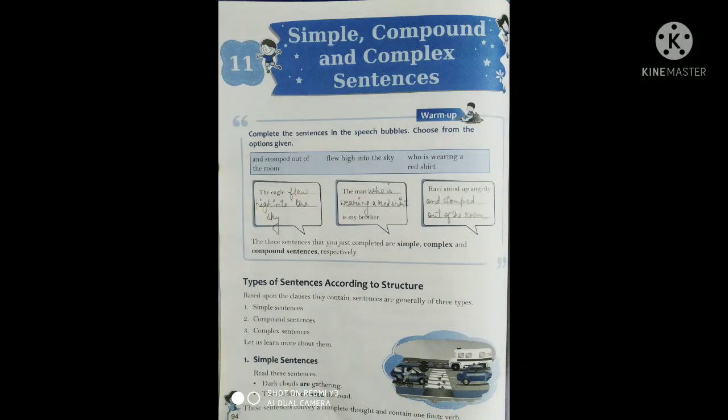Today we are going to start Chapter 11: Simple, Compound, and Complex Sentences. We are going to read sentences according to their structure, and it is classified into three types — Simple, Compound, and Complex Sentences.